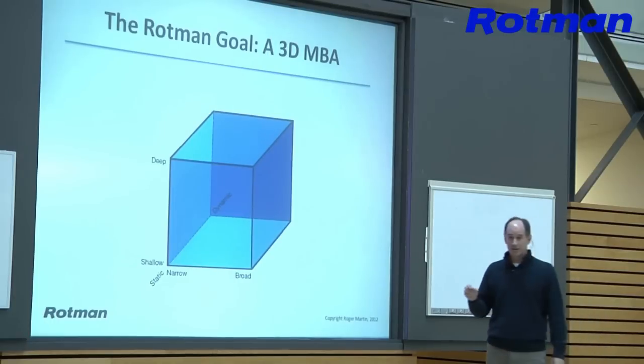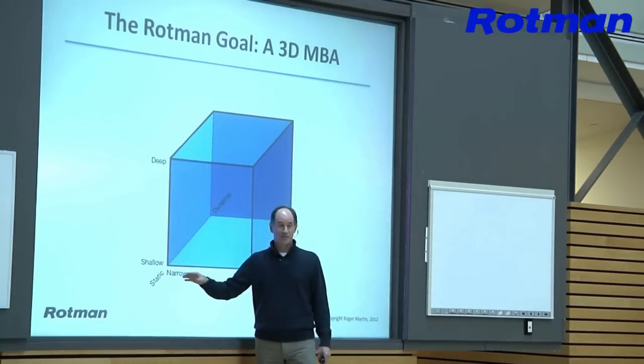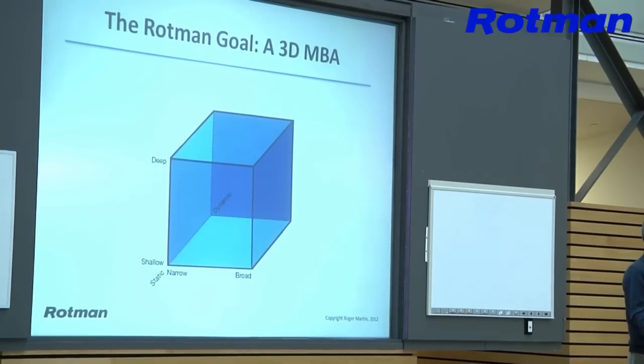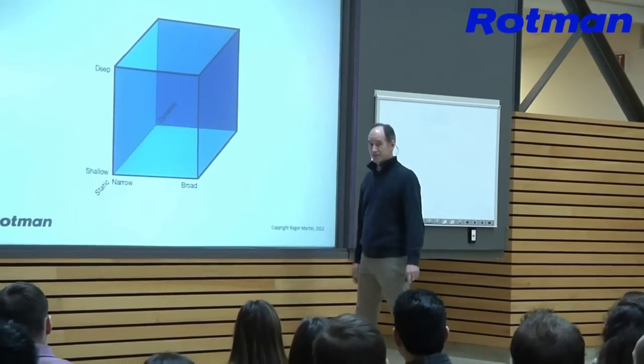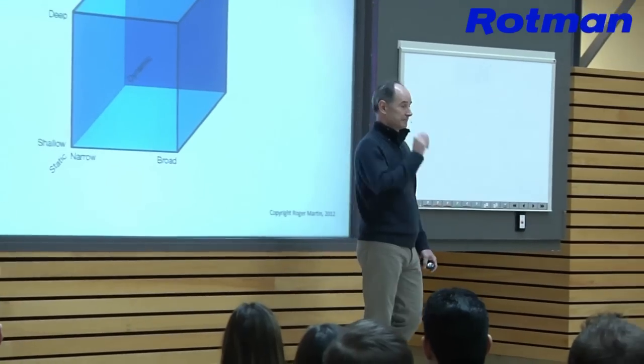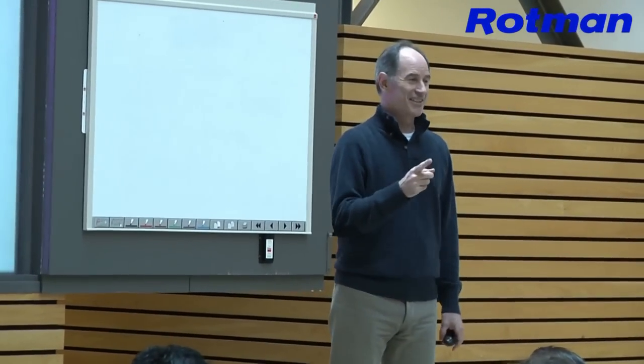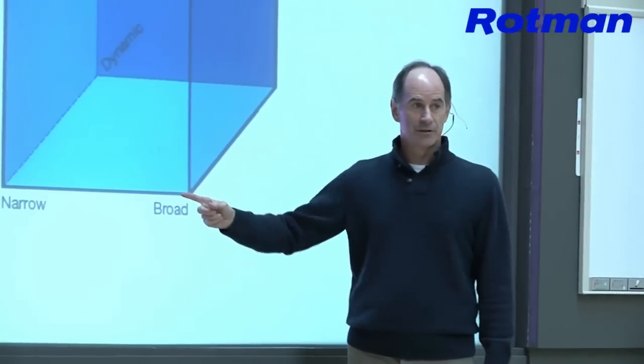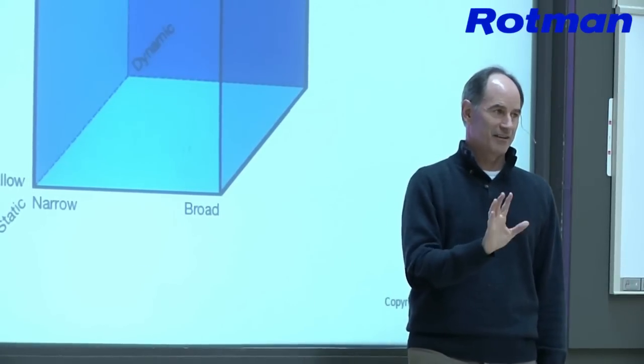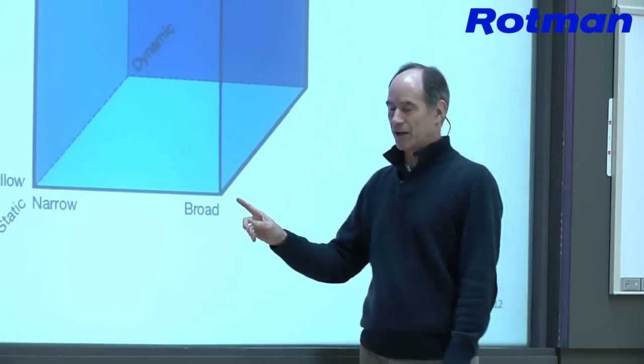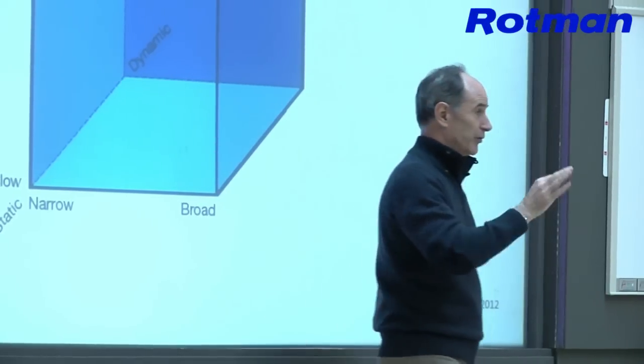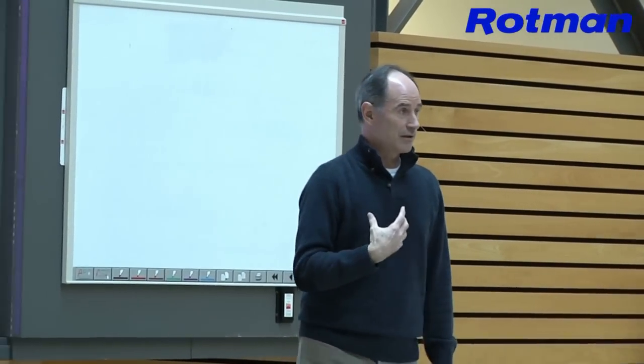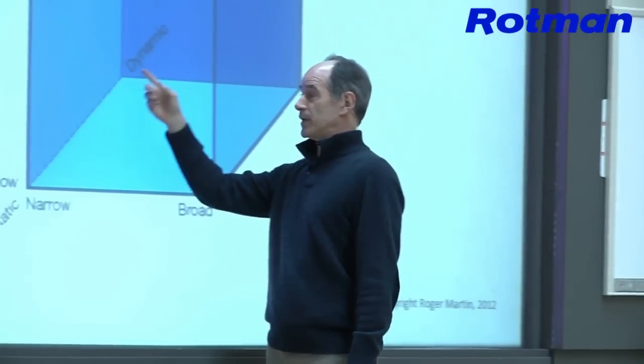Now, if you're worried that you won't get what's over here, narrow, shallow and static, we understand. We've got to teach all the things that you'd get at other schools that are in that neck of the woods. But, we don't do the either or thing because we wrote the book on Integrative Thinking. And we say, we just do and. We're going to do that and help you express your natural broadness. People aren't naturally narrow, by the way. They get pushed to be narrow. We're going to help you express your natural broadness. We're going to help you use your natural curiosity to go deeper. And we're going to help you think about and express and develop your creativity potential that will enable you to be a dynamic business leader.